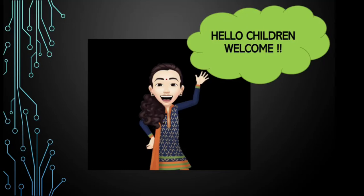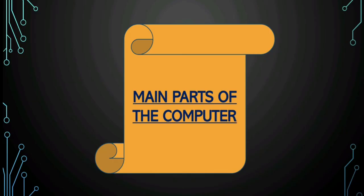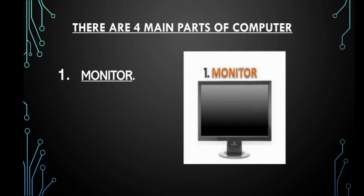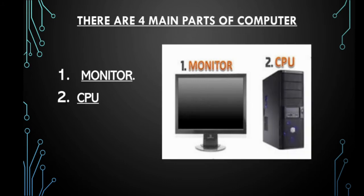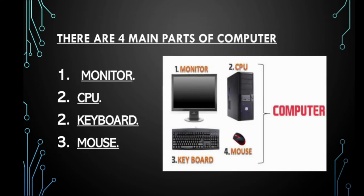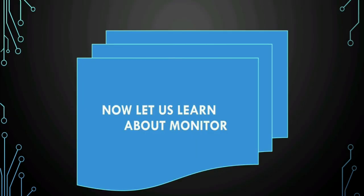Hello children, welcome. Today we will learn about the main parts of the computer. There are four main or essential parts of a computer: computer monitor, CPU or central processing unit, keyboard and mouse. Today we will discuss these four main parts. Now let us learn about the computer monitor.